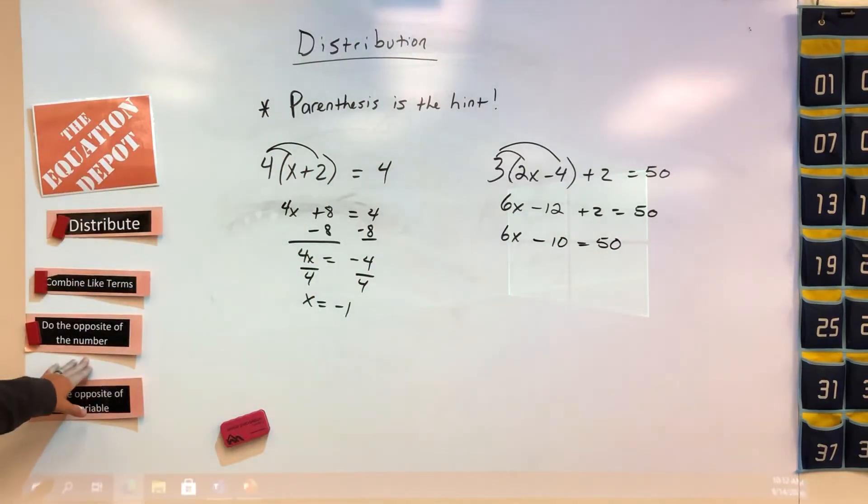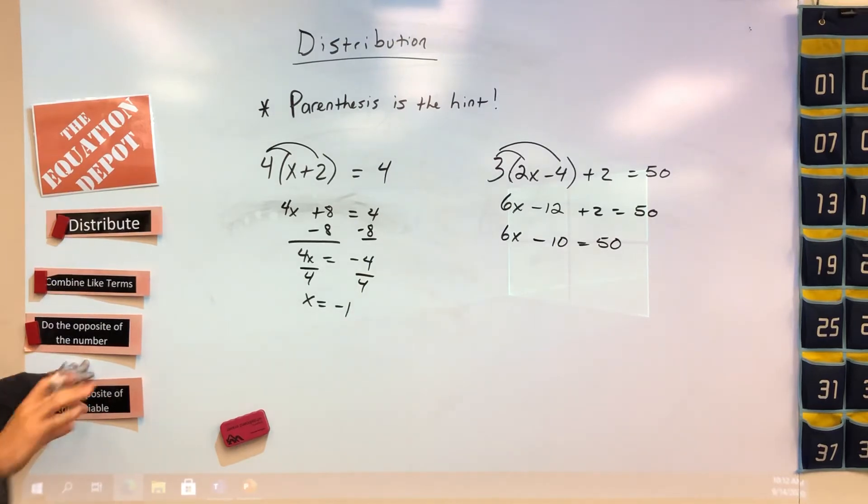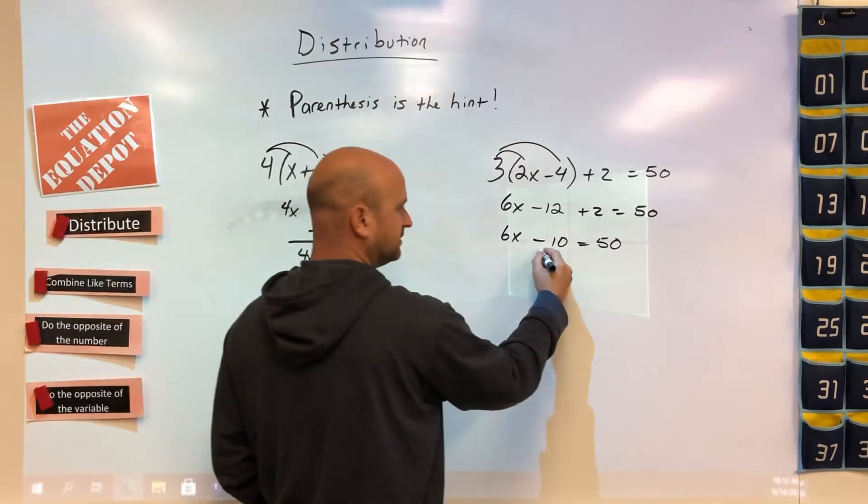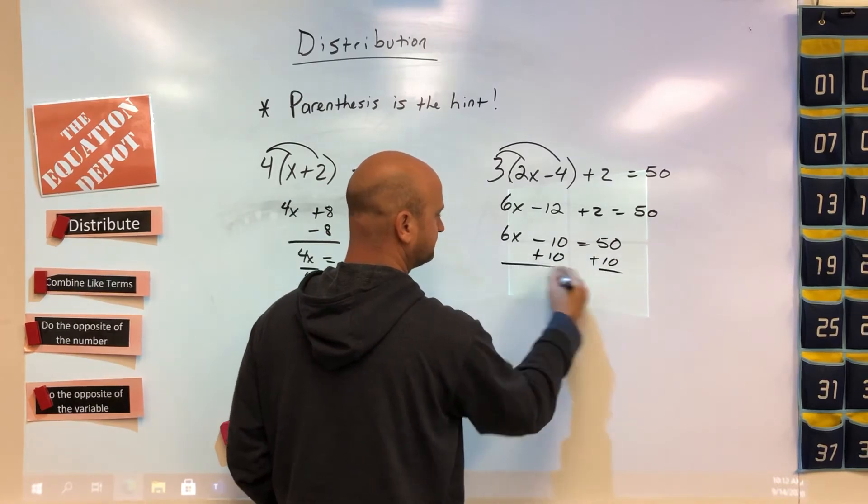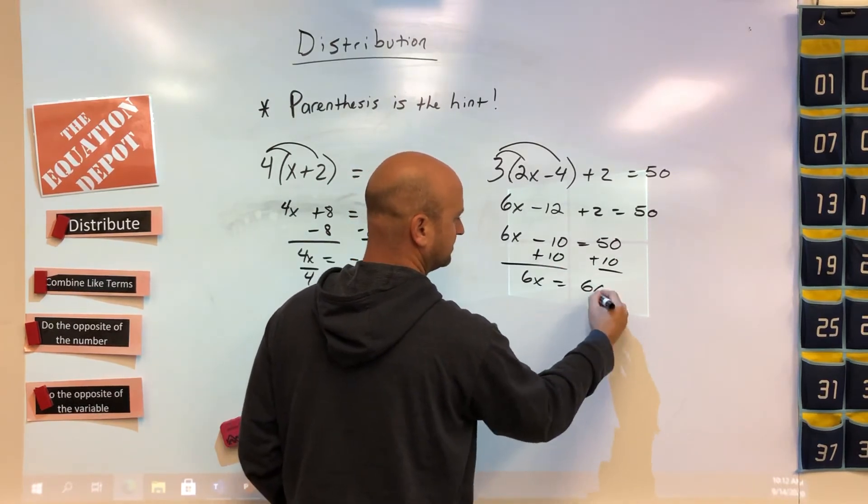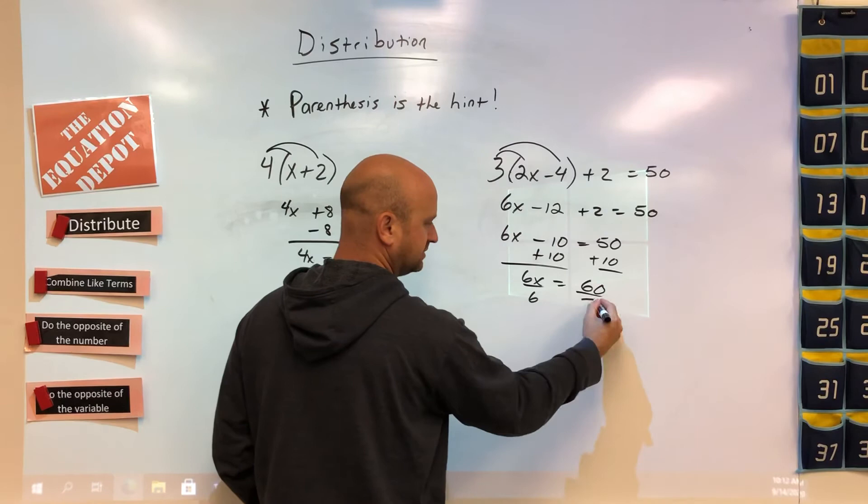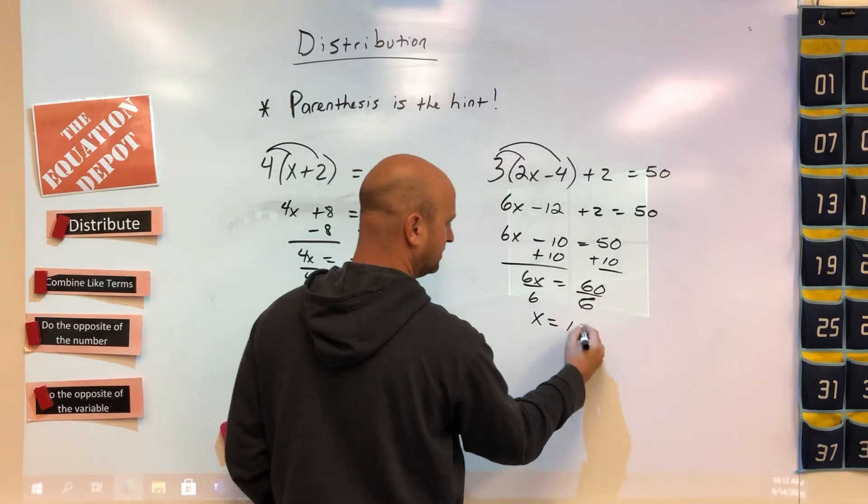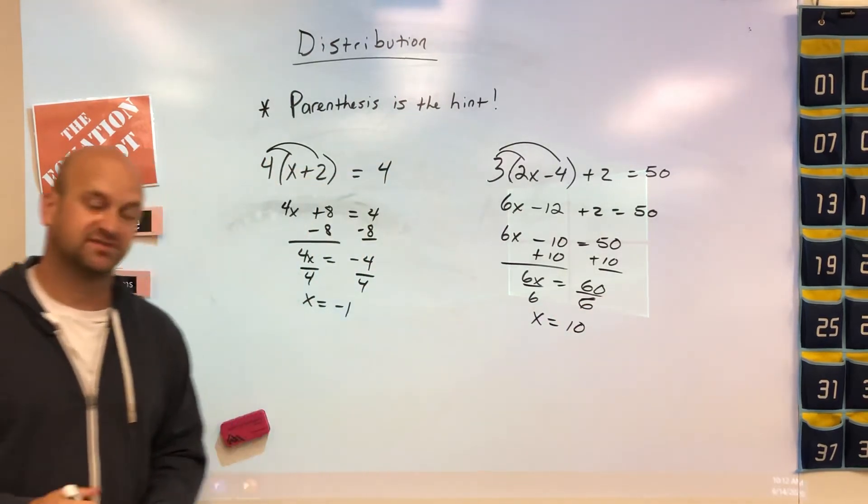Now we go down to the opposite of the number step to move it across the equal sign. In this case we're going to add 10 to both sides. Then the last step is to do opposite of the variable, and we get x equaling 10.